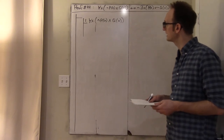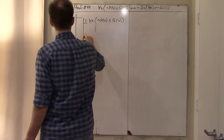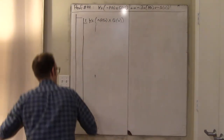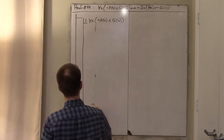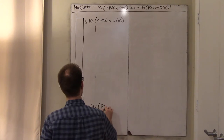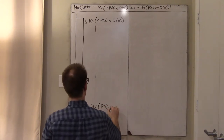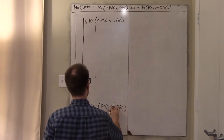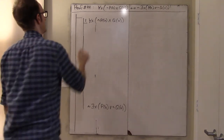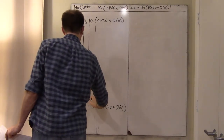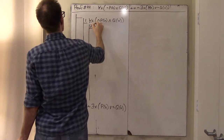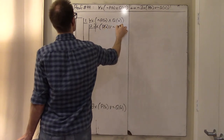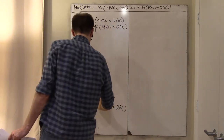Fortunately, this first half is the one that just writes itself because the thing we're trying to prove is a negation. Down here, what I want is that it's not the case that there exists an x such that p of x or not q of x. Since that's my goal, this suggests I should try to do a proof by contradiction.